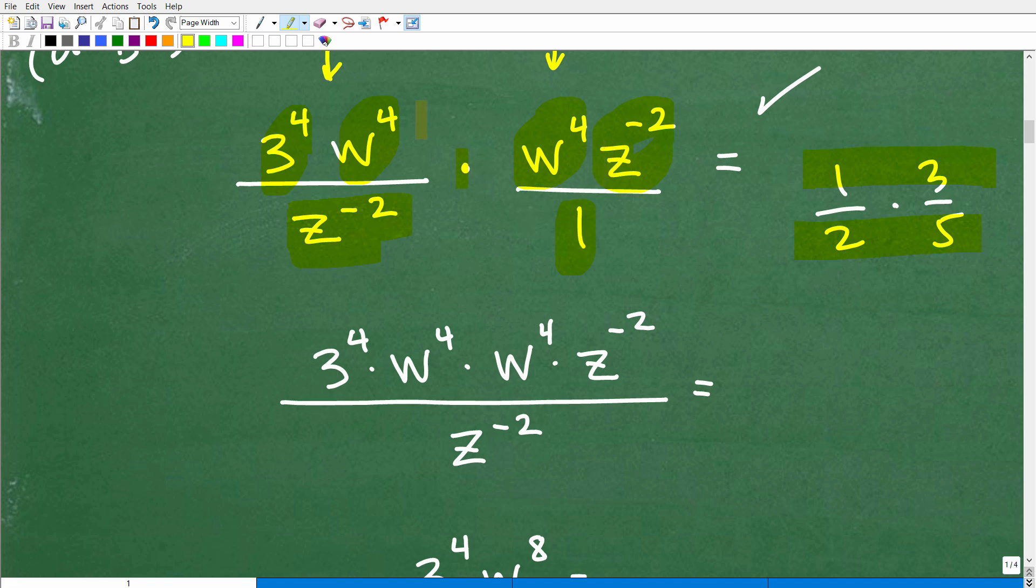So next, I want to multiply one fraction times another fraction. So I'm going to be multiplying the numerators by the respective denominators. So let's take a look at what the numerators are. Let me kind of erase all this so we can focus. All right, so my numerator is going to be this times this times this times this. So let's just write this all out. 3 to the 4th times w to the 4th times another w to the 4th times z to the negative 2. That's my numerator. And my denominator is z to the negative 2 times 1. So we'll put that right there.